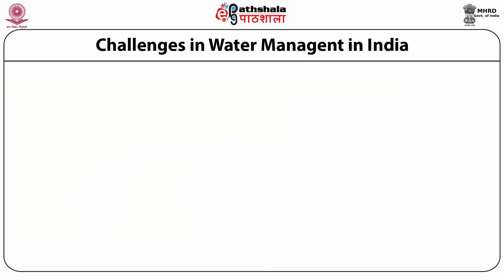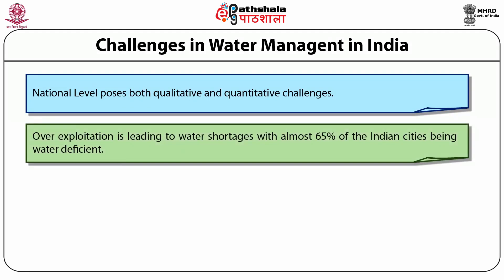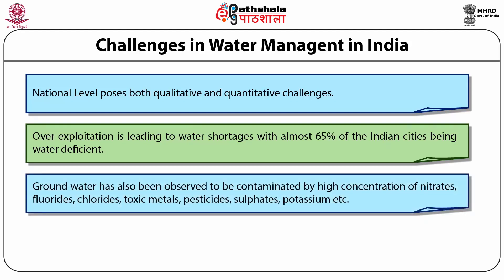Challenges in water management in India. At the national level, there are both quality and quantitative challenges. Over-exploitation is the main reason for water shortage, with almost 65% of Indian cities being water deficient. Groundwater has also been observed to be contaminated by high concentrations of various contaminants due to geographical locations, including nitrates, fluorides, chlorides, toxic metals, pesticides, sulfate and potassium — released from different activities.